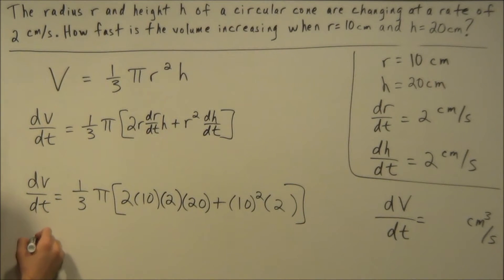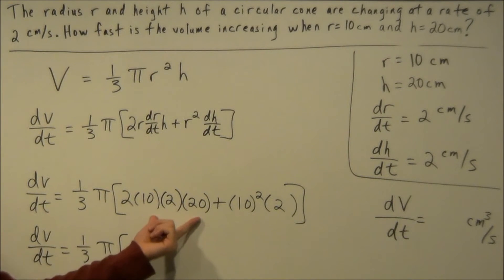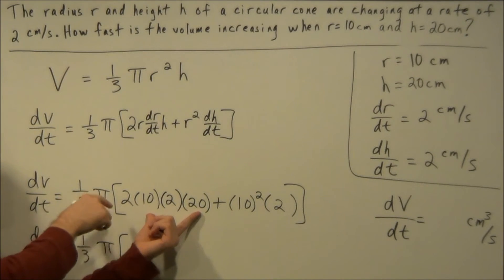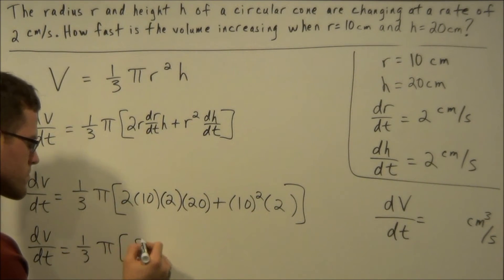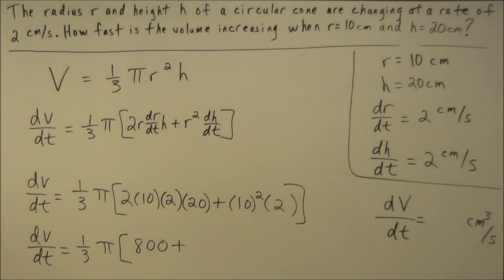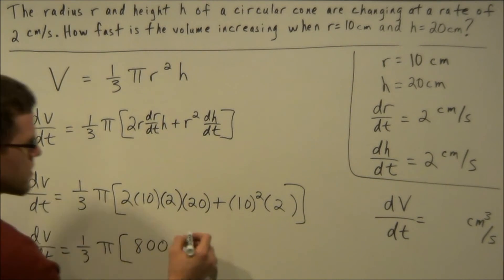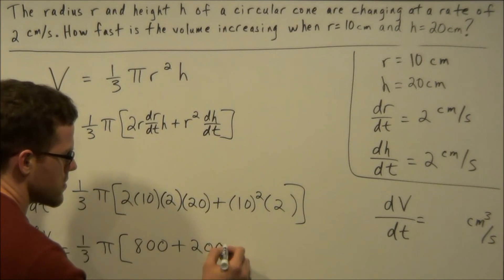So all we have to do to close this problem out is simplify. So we have one-third pi and in the brackets here 10 times 20 is 200 and then we have 200 times 2 times 2 which is 800. Plus 10 times 10 is 100 and 100 times 2 is 200.